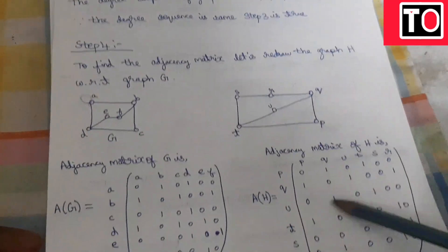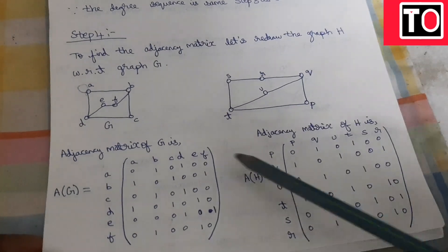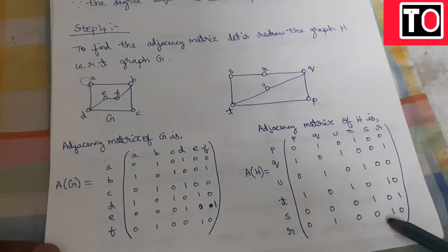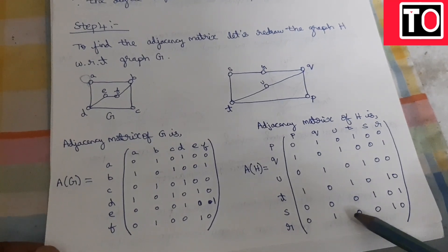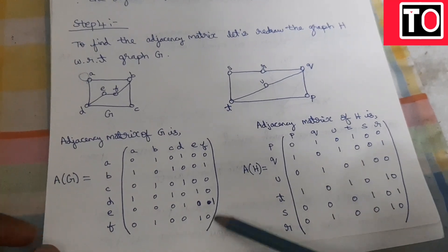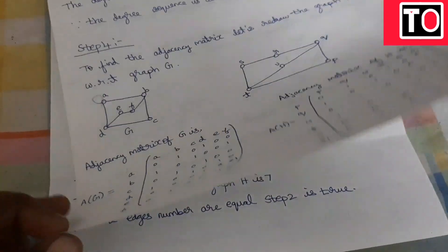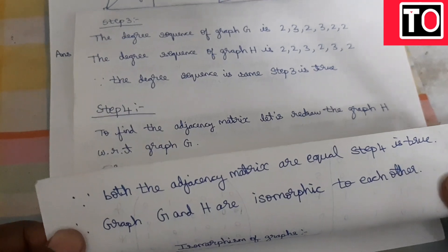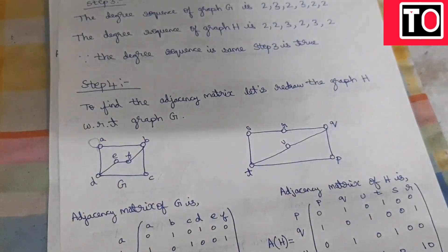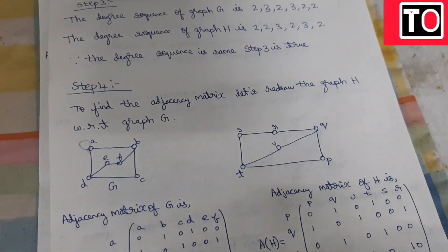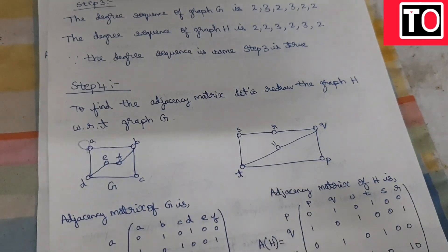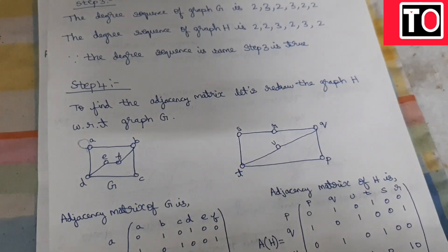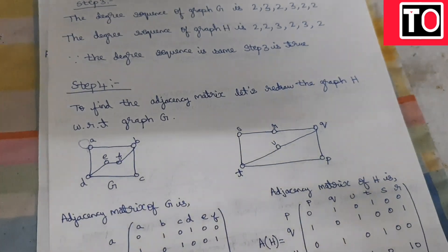In four steps, you can prove that two graphs are isomorphic. All row columns are equal. Steps 1 through 4 are all true, so the graphs are isomorphic. Please share with your friends and support our channel. Subscribe and thank you.